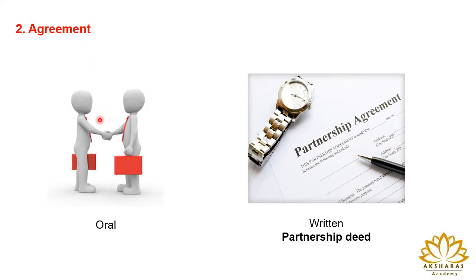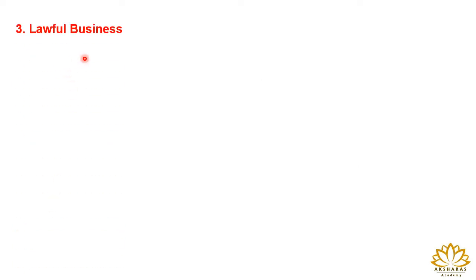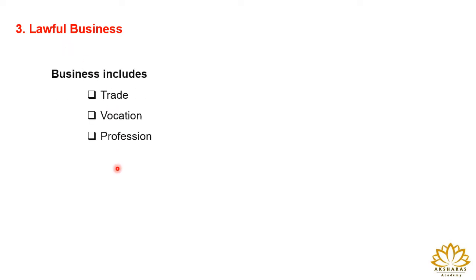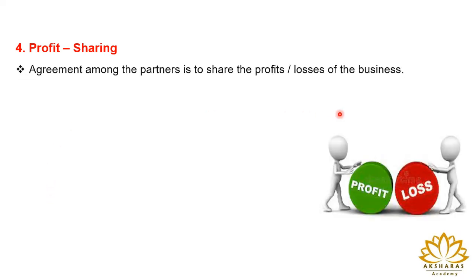This agreement is based on the relationship of the partners — whether it is going to be for a particular venture or a business, or it is going to be for a period of time. The next feature is lawful business. A partnership firm should be started to carry out a legal activity. The partners should do a business which is lawful, and business includes any trade, occupation, and profession. Through business, these partners should earn profit, and it should not be any non-profit organization.